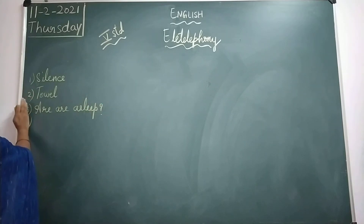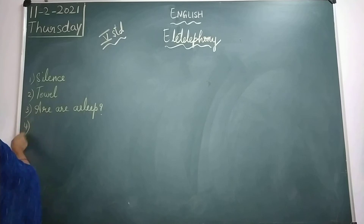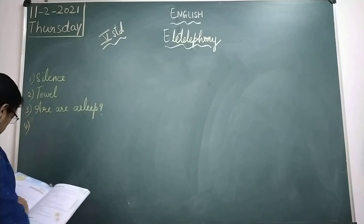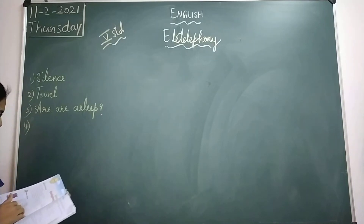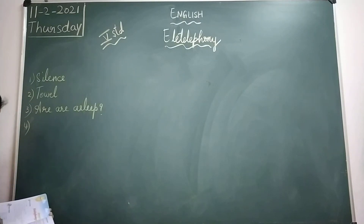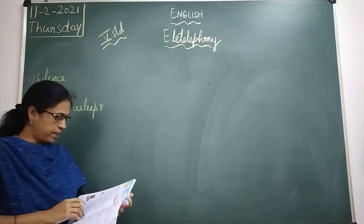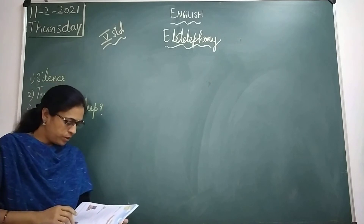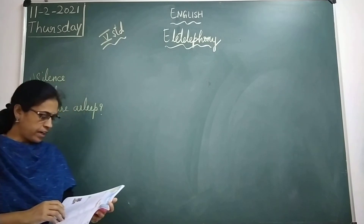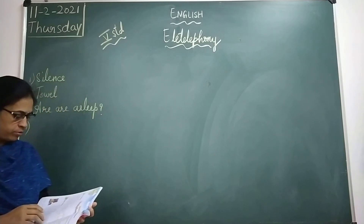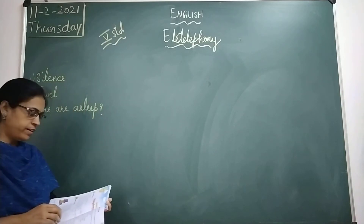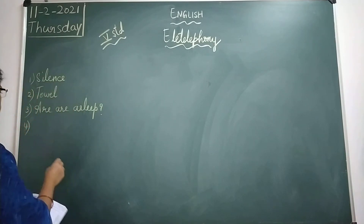Fourth riddle: Feed me and I live. Give me drink and I die. What am I? The answer is Fire.